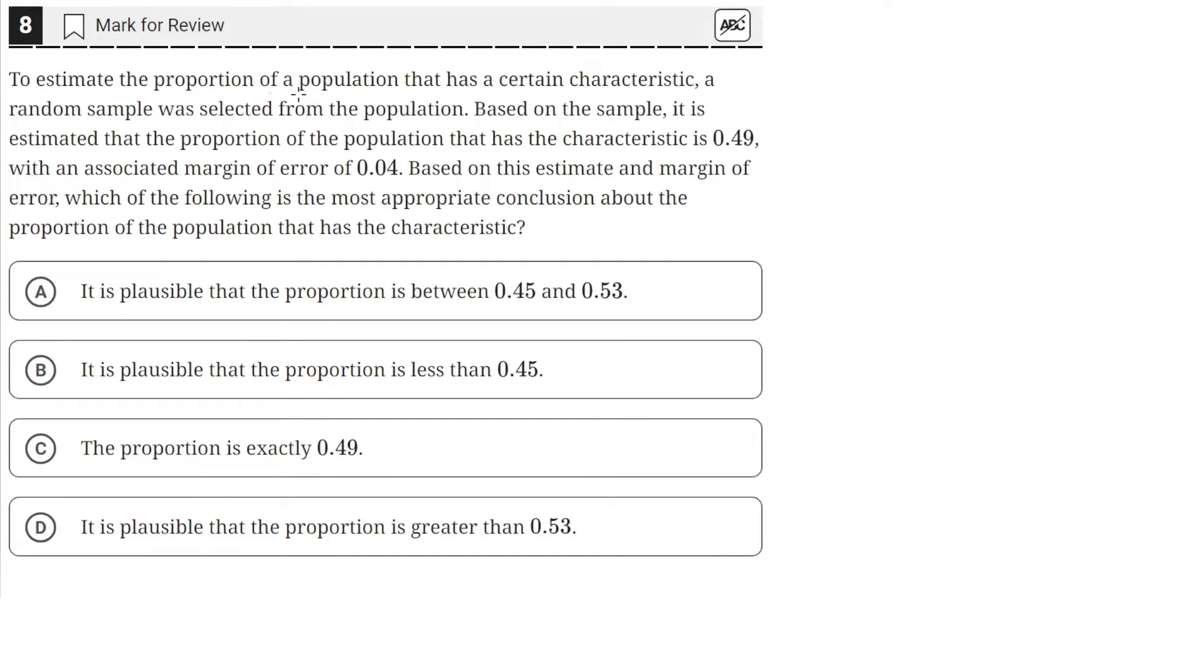To estimate the proportion of a population that has a certain characteristic, a random sample was selected from the population. Based on the sample, it is estimated that the proportion of the population that has the characteristic is 0.49,